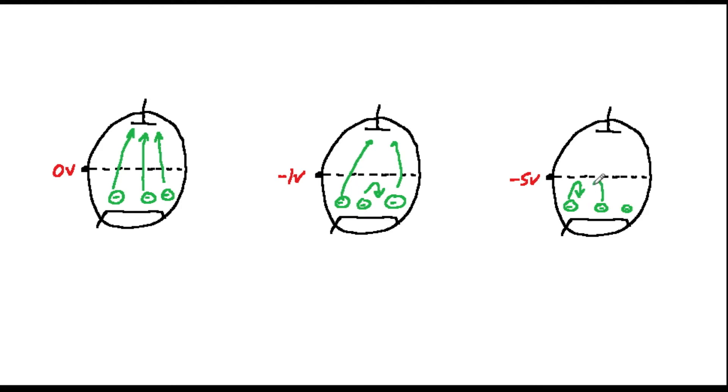We must avoid making the grid positive, as doing so would attract electrons to it, causing a current to flow through the grid, overheating it and potentially destroying the valve.